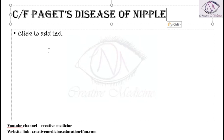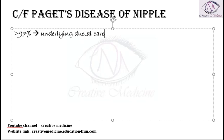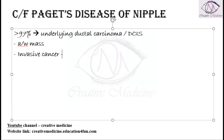Regarding clinical features, more than 97% of patients with Paget's disease have an underlying breast carcinoma — either invasive ductal carcinoma or ductal carcinoma in situ. Paget's disease may be associated with a breast mass; if invasive cancer is present, almost 93% of those patients will have a palpable mass.